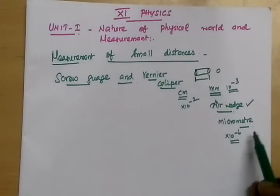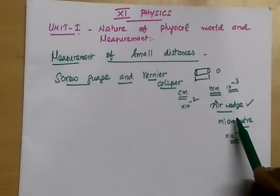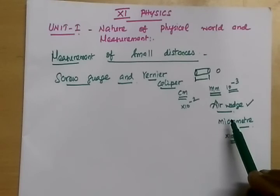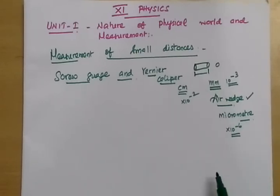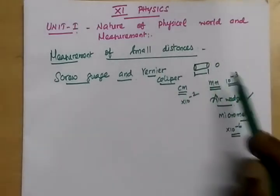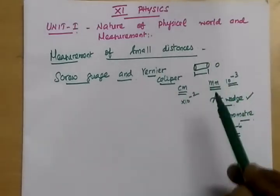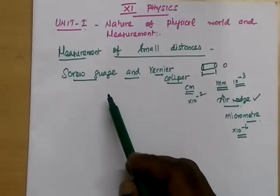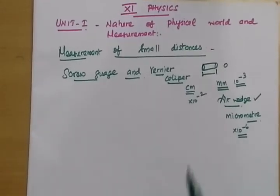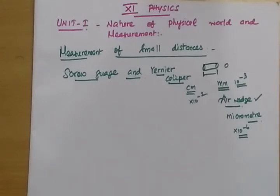We are using air wedge experiment, an instrument to measure very small diameter and radius of a given wire. It is based on interference principle. Smaller distance measurement instruments: screw gauge, vernier caliper, air wedge. Let's start, we will see screw gauge topic.